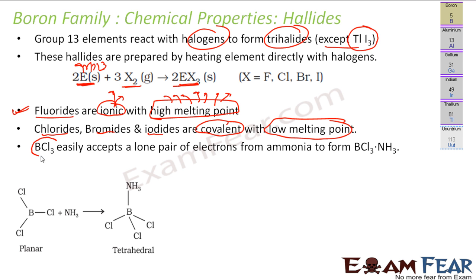We will discuss boron chloride, BCl3. It easily accepts a lone pair of electrons from ammonia to form an adduct, because boron has only six electrons and ammonia has one extra lone pair. So boron will take this lone pair. BCl3 is sp2 hybridized and becomes sp3 tetrahedral after accepting the lone pair. We will discuss more about this in the next few slides.